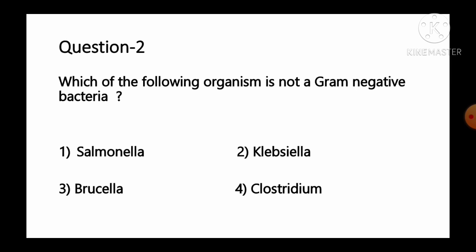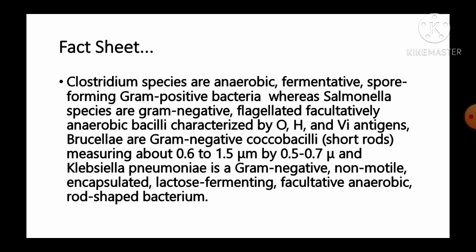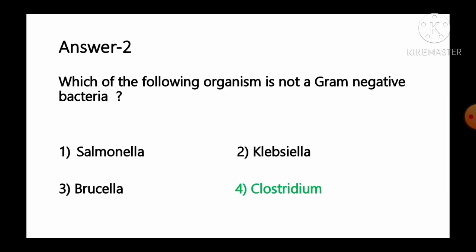Question number 2: Which of the following organism is not a gram-negative bacteria? Options: 1 Salmonella, 2 Klebsiella, 3 Brucella, 4 Clostridium. Clostridium species are anaerobic, fermentative, spore-forming, gram-positive bacteria. Whereas Salmonella species are gram-negative, flagellated, facultative anaerobic bacilli. Brucella are gram-negative coccobacilli, and Klebsiella pneumoniae is a gram-negative, non-motile, encapsulated, lactose-fermenting, facultative anaerobic rod bacterium. So Clostridium is not gram-negative — it is gram-positive. Option number 4, Clostridium, is the correct answer.